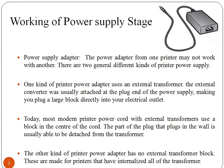Let's start with the working of the power supply stage. The power supply adapter is of two types: a printer power adapter which uses an external transformer, and a printer power adapter which has no external transformer block. In the type with an external transformer, the converter was usually attached at the plug end, making you plug a large block directly into your electrical outlet. Today, most modern printer power cords with external transformers use a block in the center of the cord, and the plug part is usually able to detach from the transformer.